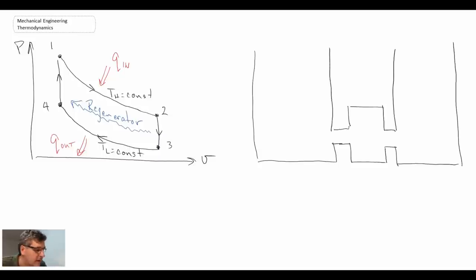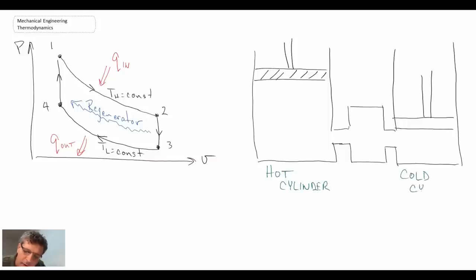And so there we have our two pistons, or two cylinders I should say. I'll draw in the pistons now. So this here we'll label as being our hot cylinder. And this is our cold cylinder. And they are connected to one another through the centerpiece, which is our regenerator.